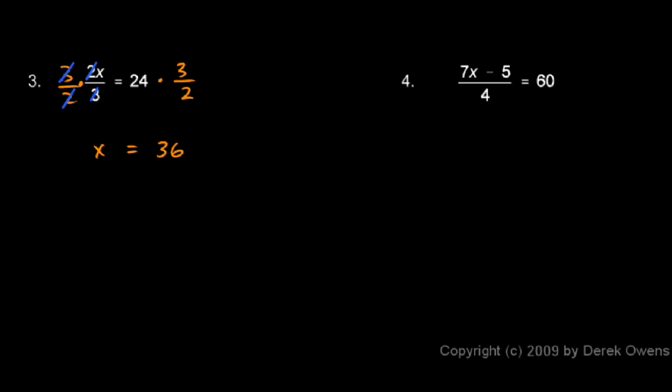And number 4, 7x minus 5 over 4 equals 60. We're trying to isolate x. Well x is multiplied by 7, then 5 is subtracted, and then all of that is divided by 4.